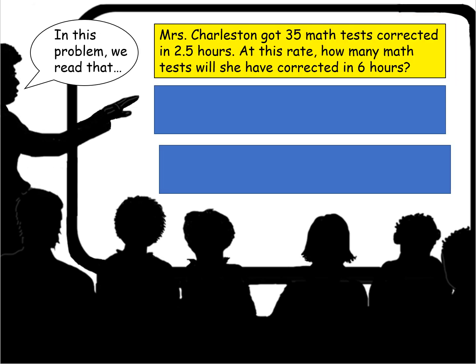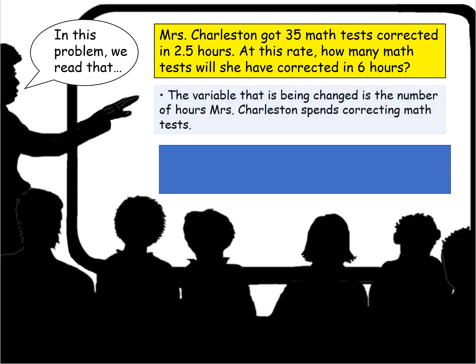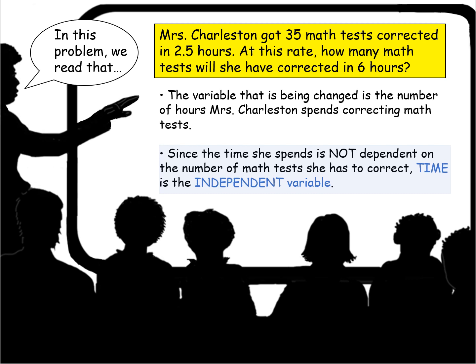In this problem, we read that Mrs. Charleston is correcting math papers and she gets 35 of them corrected in two and a half hours. The question is, at this rate, how many math tests will she have corrected in six hours? The variable that is being changed is the number of hours Mrs. Charleston spends correcting math tests. Since the time she spends is not dependent on the number of math tests she has to correct, time is the independent variable.